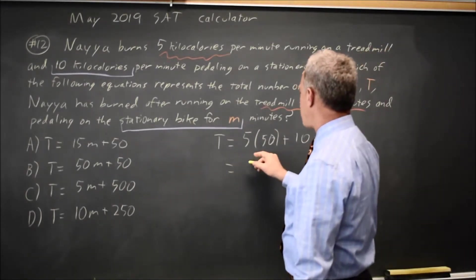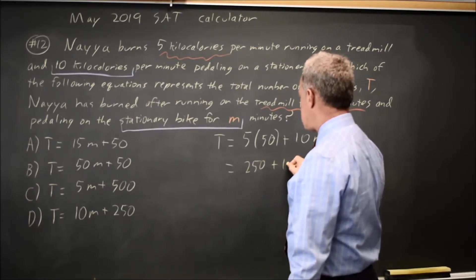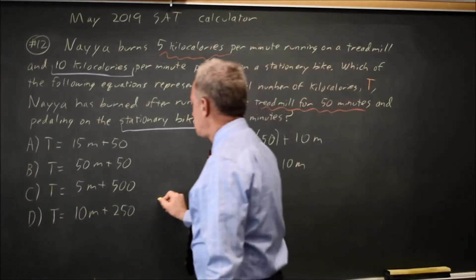So that'd be 5 times 50 is 250 plus 10N, which is choice D.